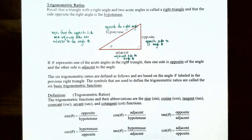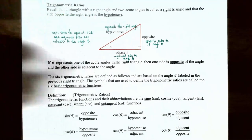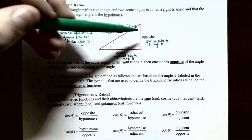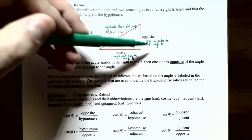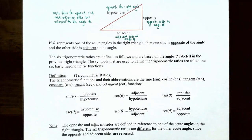Notice that the opposite and adjacent sides are relative to the angle theta. If we call the other angle theta, then the opposite and adjacent sides would be reversed. The six trigonometric ratios are defined based on the angle theta labeled in the right triangle, and the symbols used are called the six basic trigonometric functions.